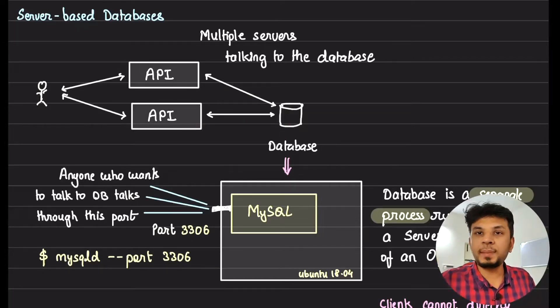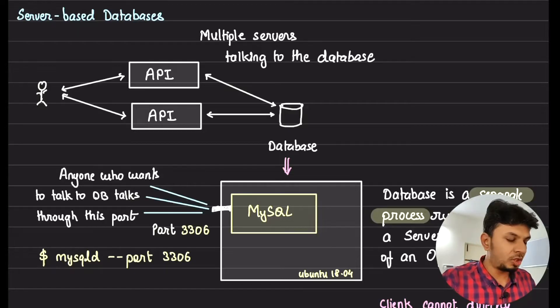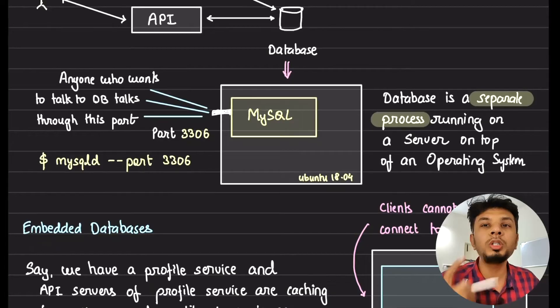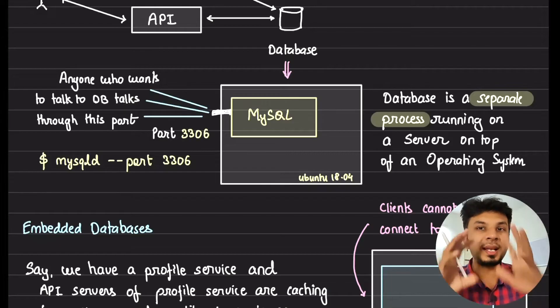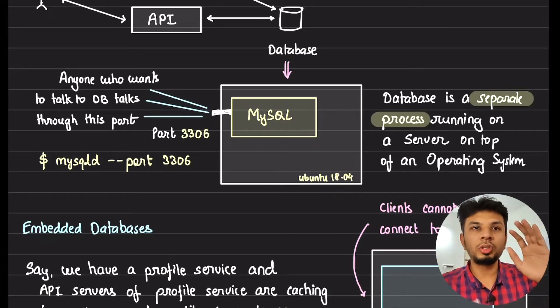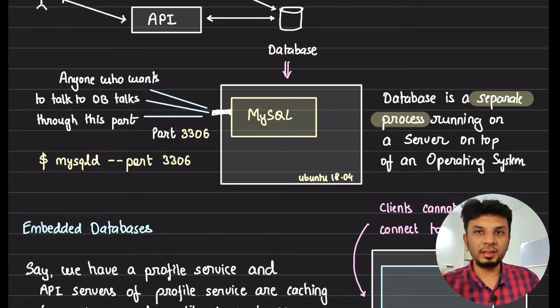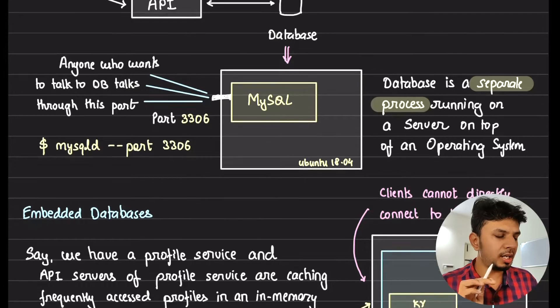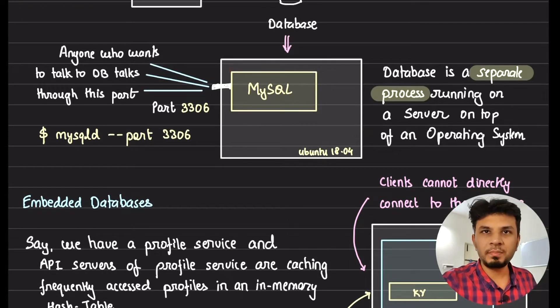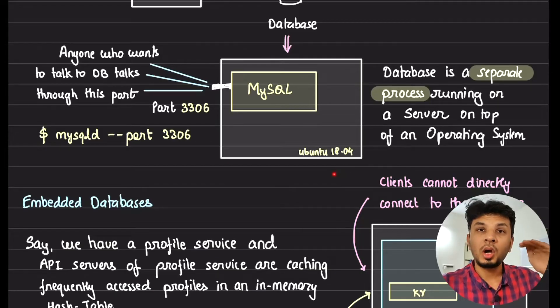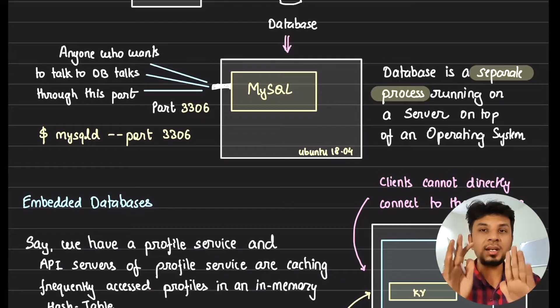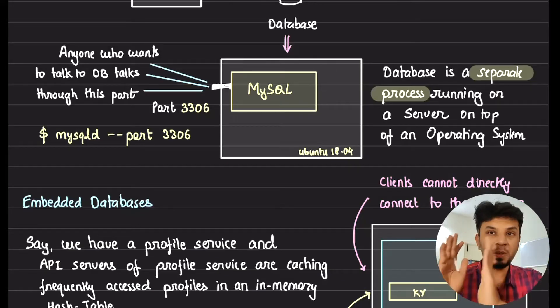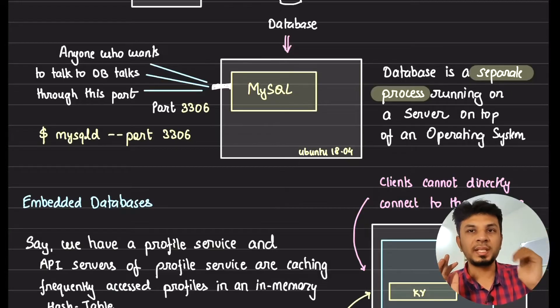A very standard way to build a system is this: you have a user, you have a bunch of API servers and then you have a database and all API servers connect to that database. So here if you see there is a separate instance of database which has spun up which talks over a particular port. Anyone who wants to talk to your database talks to a particular port and your database is directly exposed on that port.